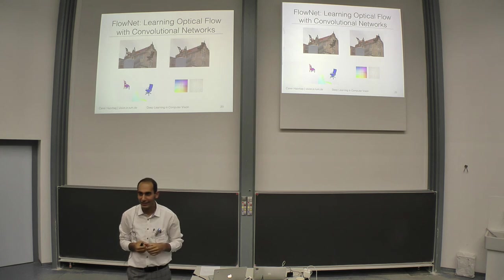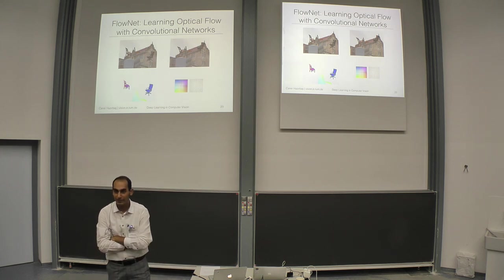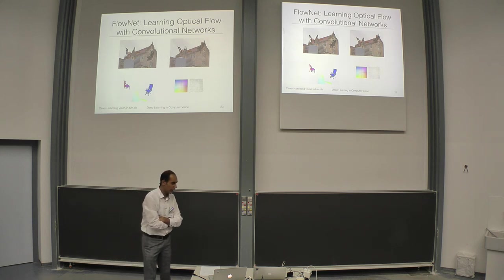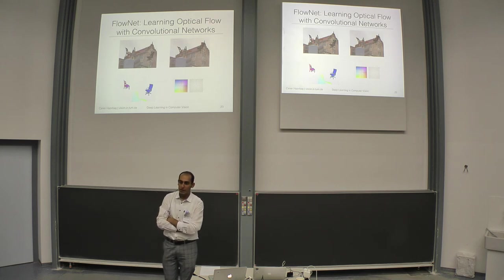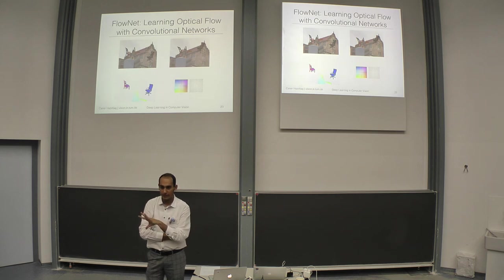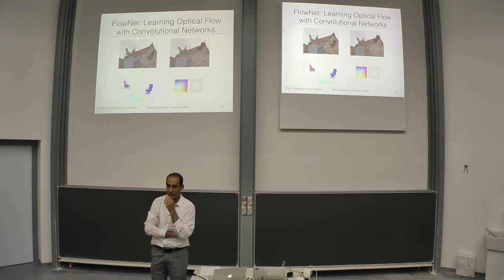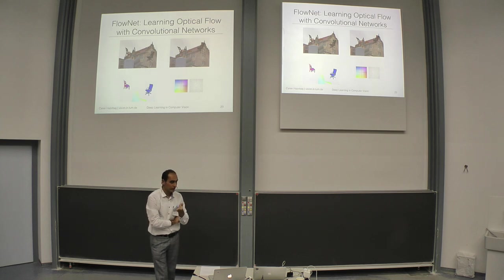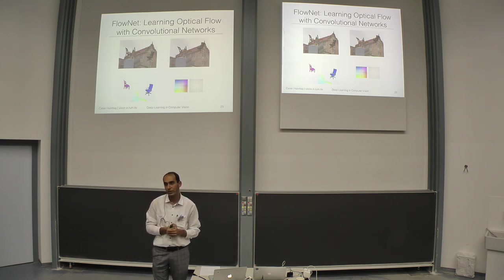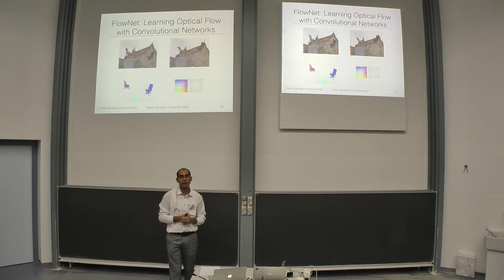Q: What are the possible applications of optical flow? A: For autonomous cars, to detect how the surroundings move. You can combine optical flow with reconstruction or tracking camera position. For visual SLAM, it's important to see how objects move around you.